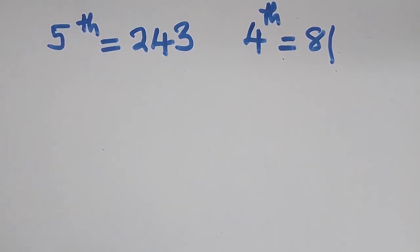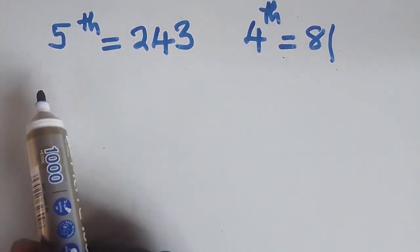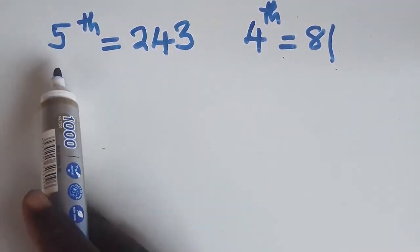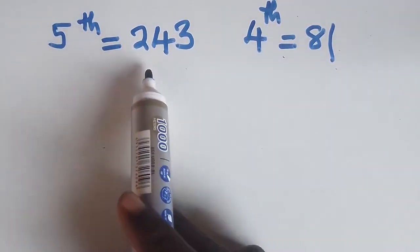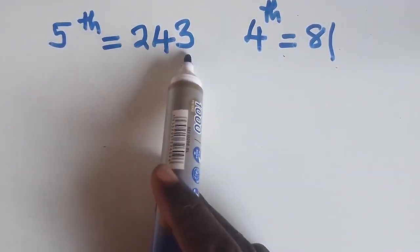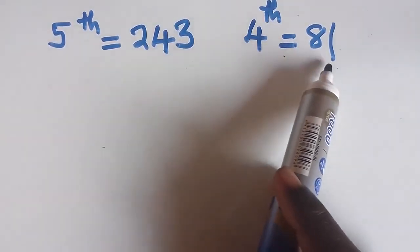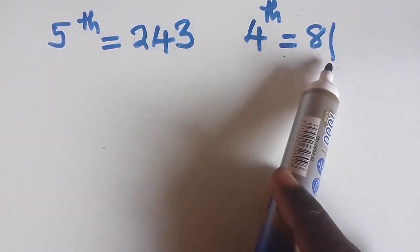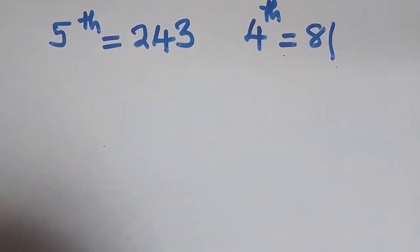In a geometric progression, the fifth term (T5) is equal to 243, and the fourth term (T4) was equal to 81. The first question is to find the first term and the common ratio.